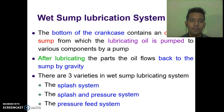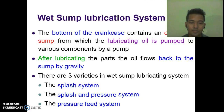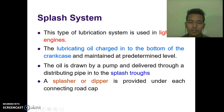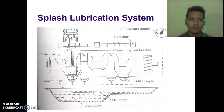The wet sump lubrication system: the bottom of the crankcase contains an oil pan or sump, from which the lubricating oil is pumped to the various components by a pump. After lubricating the parts, the oil flows back to the sump by gravity. There are three varieties: the splash system, the splash and pressure system, and the pressure system. The splash system is used in light-duty vehicles. The lubricating oil collects at the bottom of the crankcase and is maintained at a predetermined level. The oil is drawn by a pump and delivered through a distributing pipe into the splash trough. A splasher or dipper is provided under each connecting rod cap. Here you can see the diagram of the splash lubricating system.